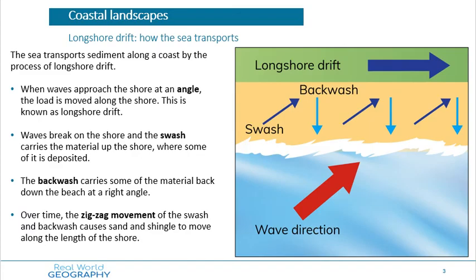Now we've looked at how the sea erodes; we're going to look at how the sea transports material. The sea transports by longshore drift. We briefly mentioned longshore drift in our previous chapter but now we'll look at it in more detail. Longshore drift is very simple. To recap: waves are caused by wind, and it's very rare that wind blows against the coastline at a perfect straight angle — it usually blows at an odd angle, maybe 45 or 50 degrees.